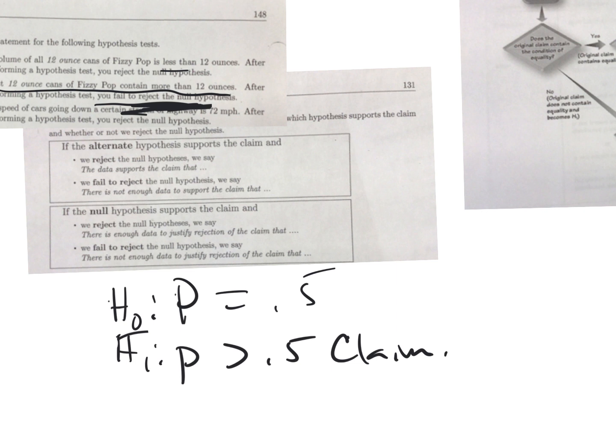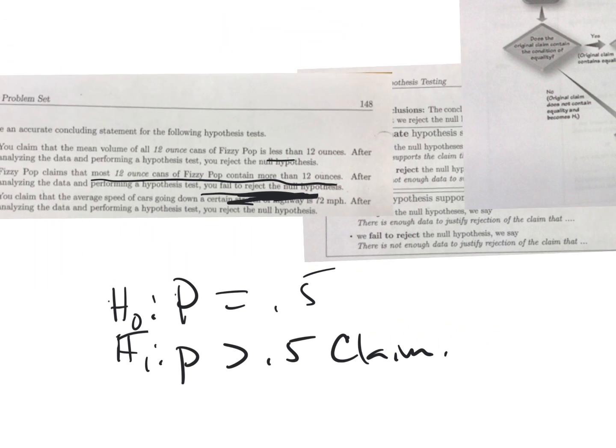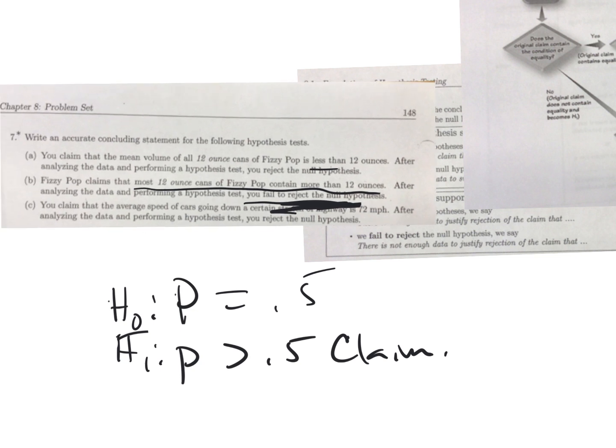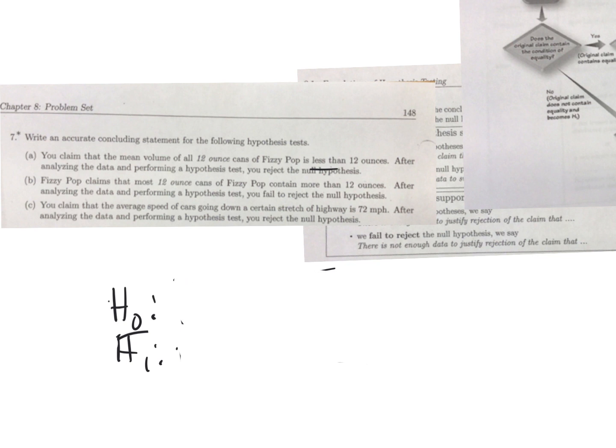Let's try this last one. You claim that the average speed of cars going down a certain stretch of highway is 72 miles an hour. We're talking about means and the speed is 72, so H0: μ = 72. This is the claim.